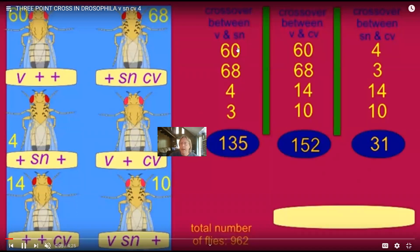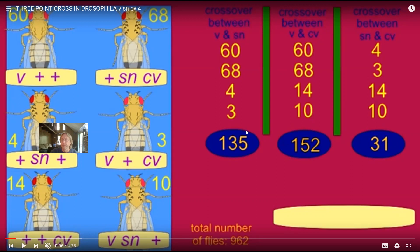With all the recombinant and non-recombinant flies counted, there were 962 total flies. Adding each column: all numbers in the vermilion-singed column equal 135; all numbers in the vermilion–cross-veinless column equal 152; and all numbers in the singed–cross-veinless column equal 31. Dividing each of these three totals by 962 gives us the map units separating any two of those alleles.